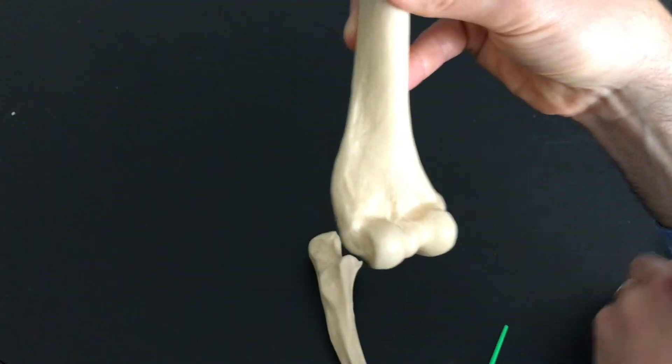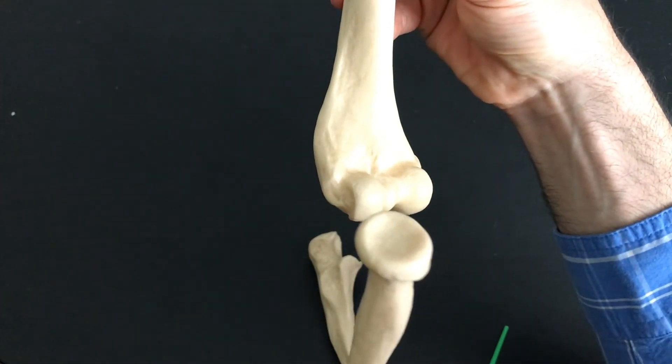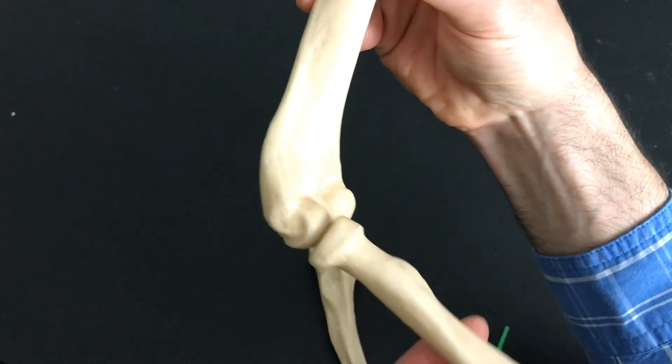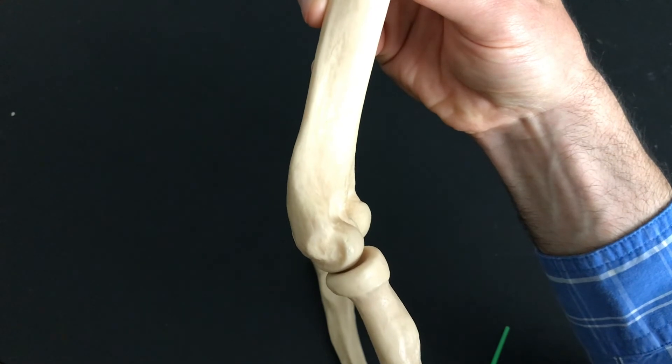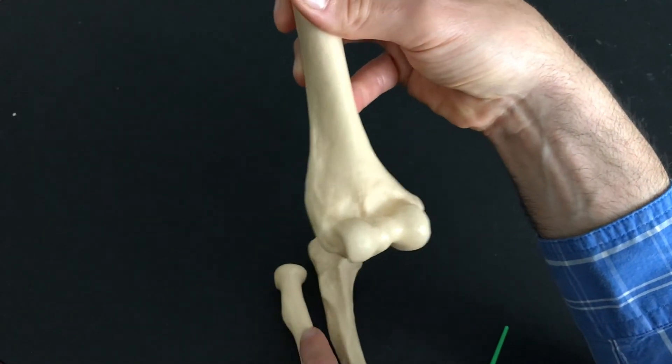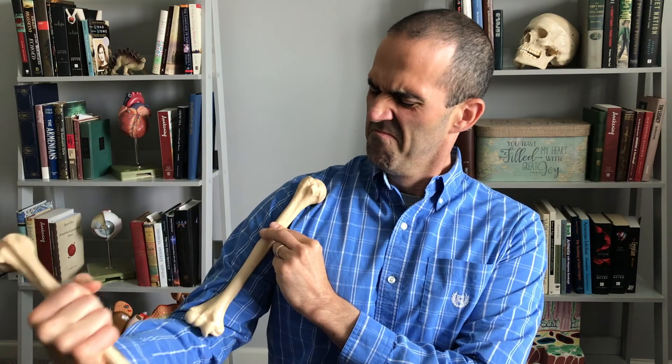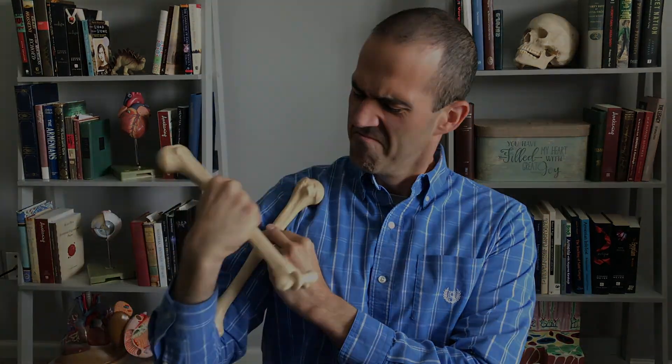And again, with the radial head of the radius fitting right on the capitulum of the humerus. So they articulate quite nicely. And again, we'll see you next time.